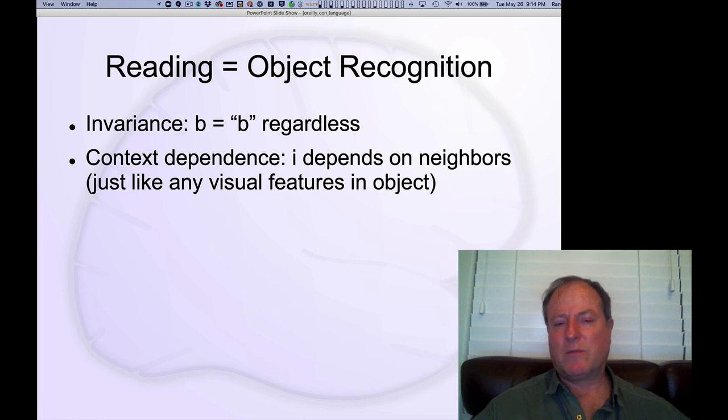B is pronounced the same way pretty much regardless of where it shows up. So you need some sort of mix of regularity, independent pronunciation of individual letters, in addition to the ability to take into account the context around the letter. And this is very much like object recognition.